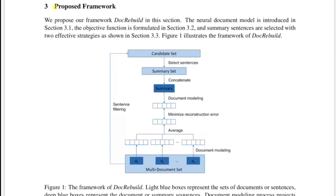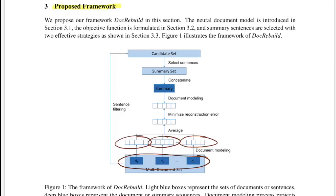This is the framework they proposed. You have N documents, named d1 to dN — this is the multi-document set. You calculate the embedding vector for each document and then average all the embeddings to get an average vector representation for all documents in the embedding.